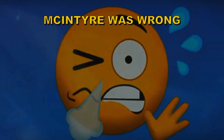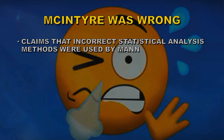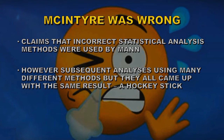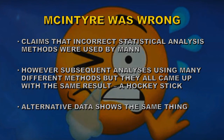It turns out that McIntyre was completely wrong. His claims that the incorrect statistical analysis used by Mann biased the results were proven incorrect by subsequent analyses by others using many different statistical methods, but they all came to the same result — a hockey stick. Even using different sets of data as McIntyre suggested came to the same result. And the reason for that is because that is the trend in the data, so no matter what statistical method you use, the data will show the same thing.